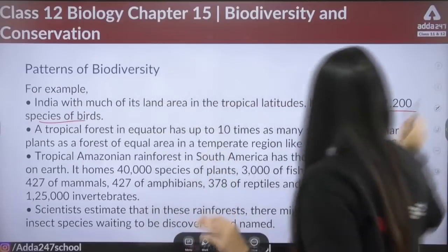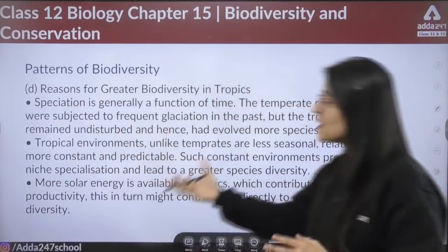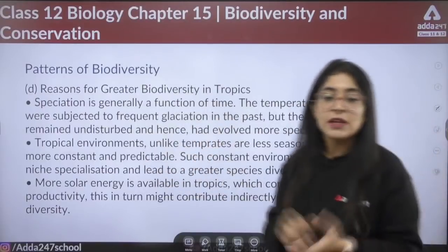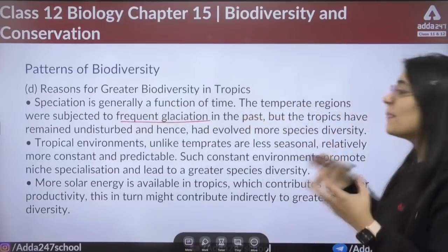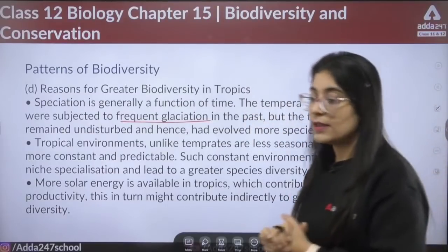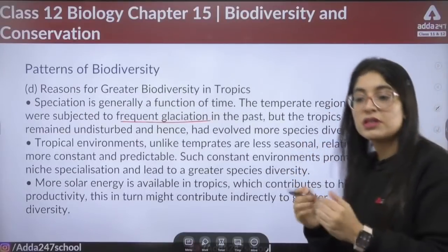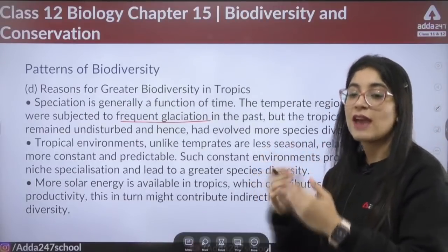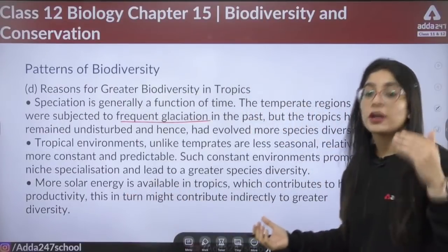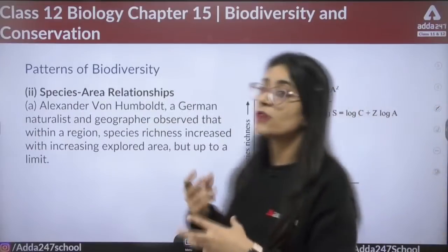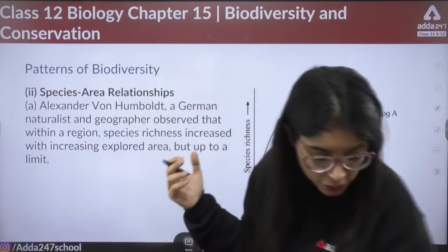India, with much of its land area in tropical latitudes, has more than 1,200 species of birds. Tropical areas have greater biodiversity because speciation is a function of time — temperate regions were prone to frequent glaciation in the past, while tropical environments remained undisturbed, relatively constant, and more predictable. More solar energy is also available in the tropics, which increases productivity and biomass production.